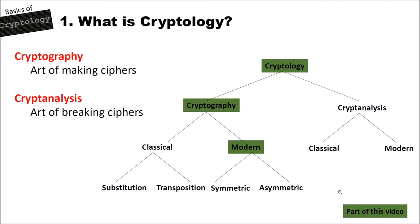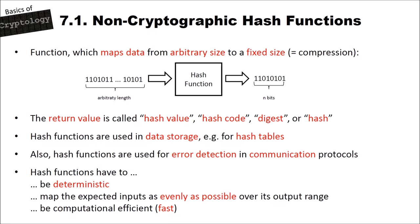What is a non-cryptographic hash function? A hash function is a function which maps data from arbitrary size to a fixed size, so the function performs some kind of compression. On the left side we have a bit string of arbitrary length — even zero bits to arbitrary length — and this goes into our hash function, which returns a fixed value of, for instance, n bits. The return value is called the hash value, hash code, digest, or simply the hash.